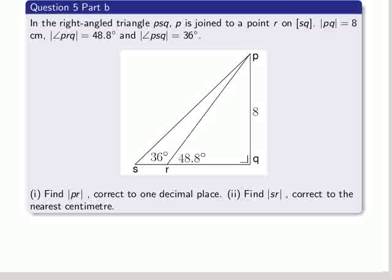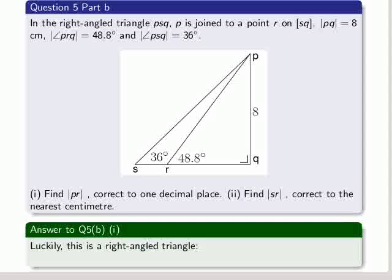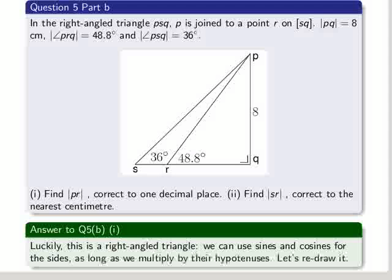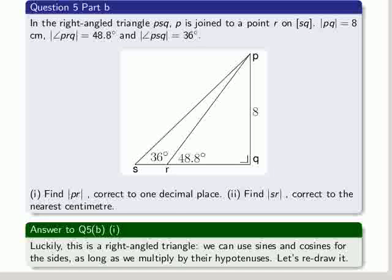So we have to find PR correct to one decimal place, and then find SR correct to the nearest centimetre. Luckily this is a right angle triangle. We can use sines and cosines for the sides, as long as we multiply them by their hypotenuses.